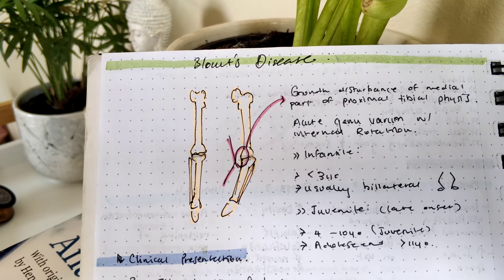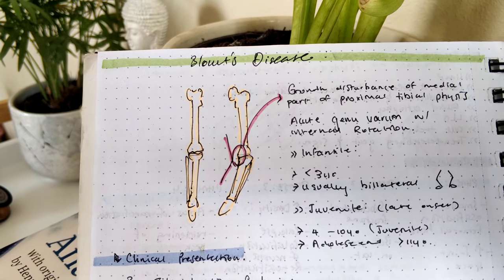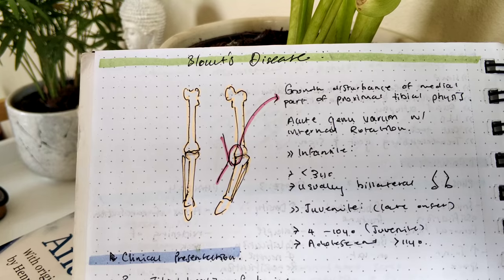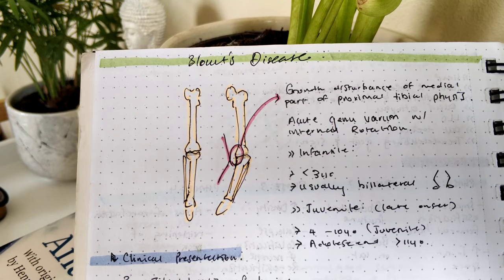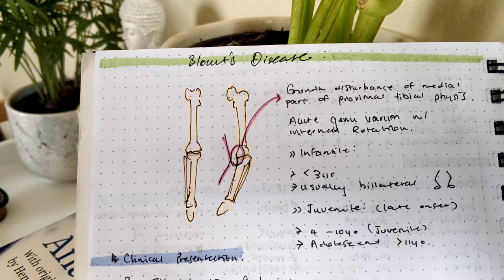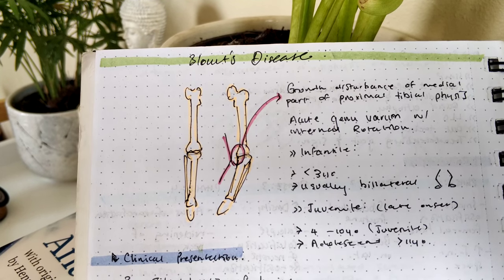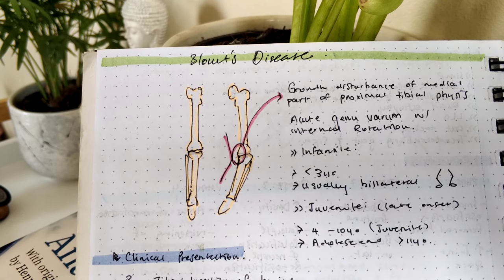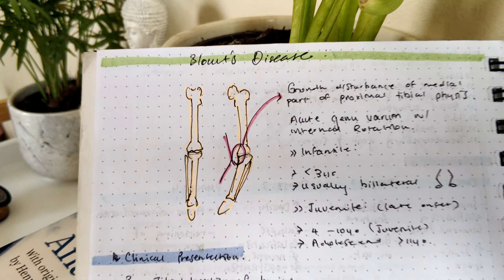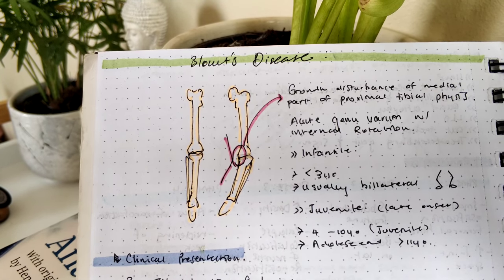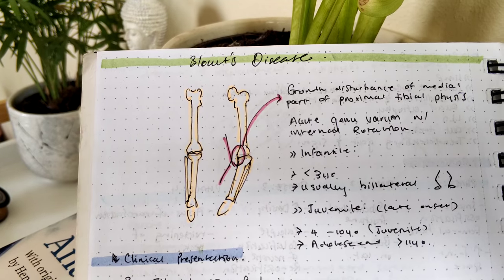Blount's disease can be separated into either infantile or juvenile categories. Infantile is when the patient presents below the age of three, and these are usually bilateral cases, meaning there is genu varum with internal rotation in both legs.